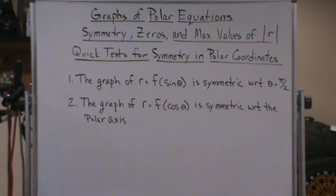And also knowing what values of theta for which r is zero. For instance, in the first example that we did, we saw that the absolute value of r, the maximum value, was four and it occurred when theta was pi over 2.